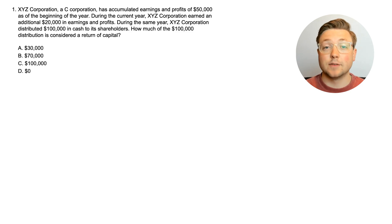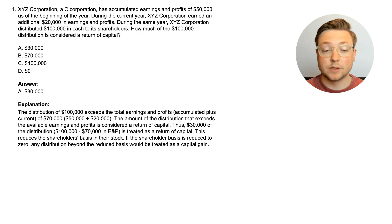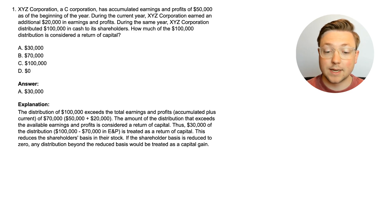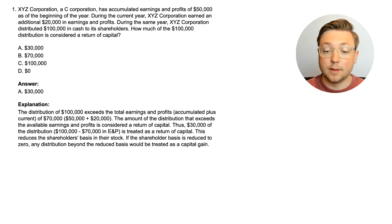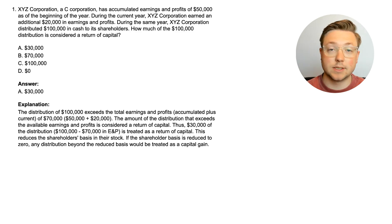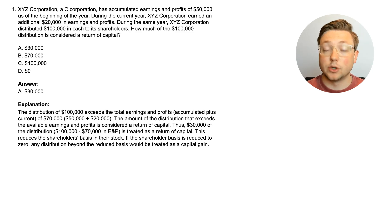Let's dive straight into the answer to learn how this works. The answer is $30,000 will be a return of capital. The distribution of $100,000 exceeds the total earnings and profits — accumulated plus current — of $70,000 total ($50,000 plus $20,000). The amount of the distribution that exceeds the available earnings and profits is considered a return of capital. Thus, $30,000 of the distribution — the $100,000 less the $70,000 covered by E&P — is treated as a return of capital.